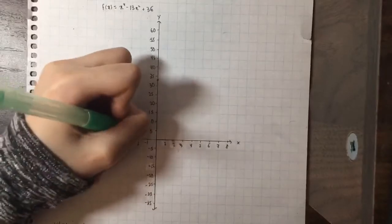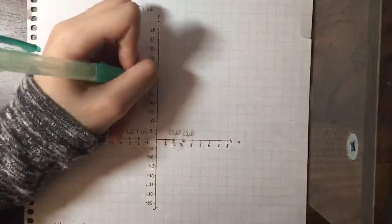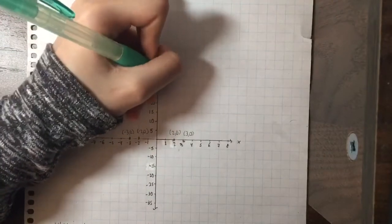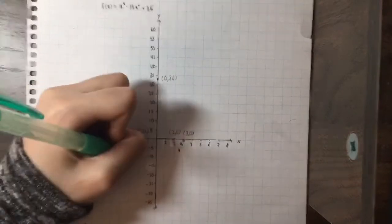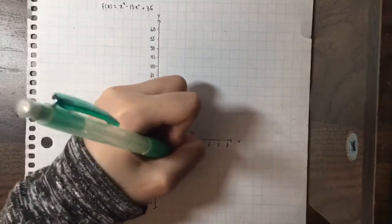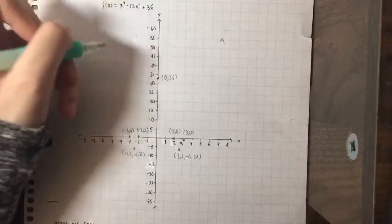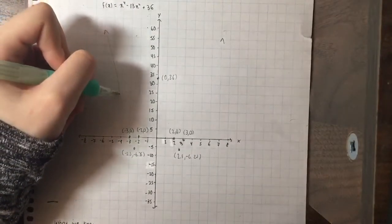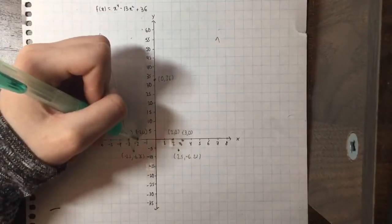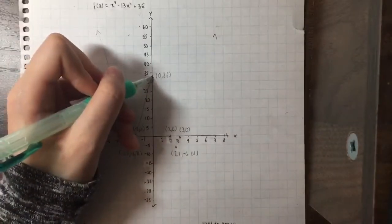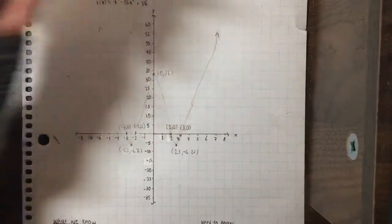Plotting the known points: x-intercepts at (negative 3, 0), (negative 2, 0), (2, 0), and (3, 0); local maximum at the y-intercept (0, 36); and absolute minimums at (negative 2.5, negative 6.25) and (2.5, negative 6.25). Since the order of the x-intercepts is 1, the graph passes straight through each intercept rather than bouncing off. The curve goes down to each minimum, up through to the local maximum, and continues infinitely upward on both ends — this is the rough graph.